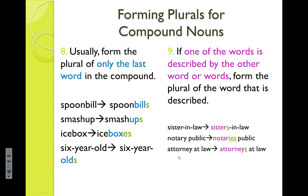Last but not least — one you see all the time on shows like CSI, SVU, Bones — attorney at law. We're not talking about multiple laws; we're talking about multiple attorneys. Take a minute and see if you can explain why attorneys did not change to IES whereas notaries did. The answer: attorneys doesn't change because there is a vowel before the Y, so all you do is add S. Whereas with notaries, we had a consonant before the Y, so we changed it to IES.